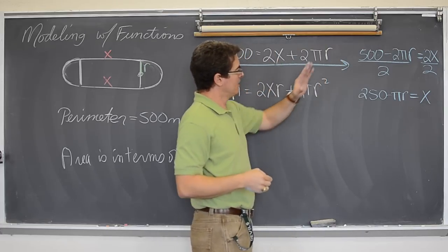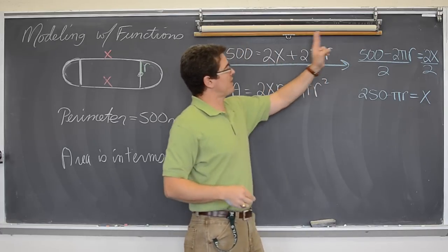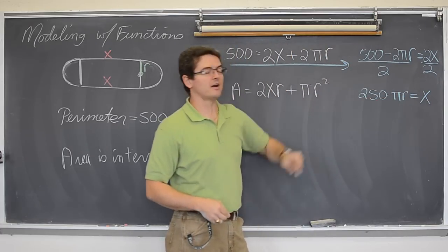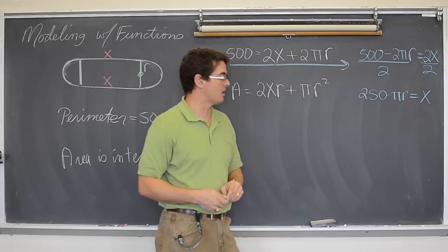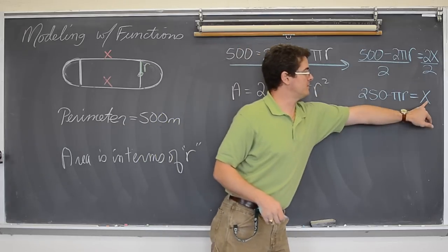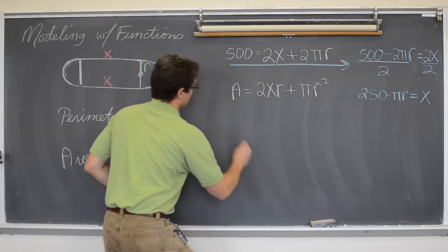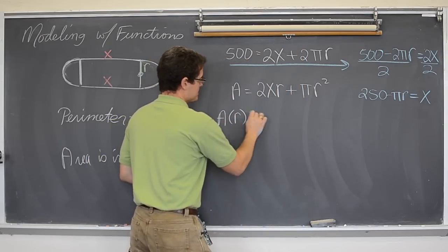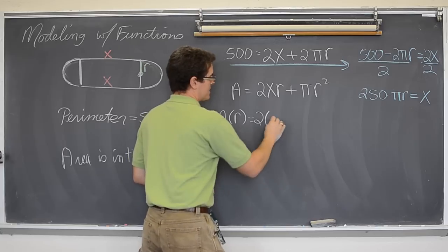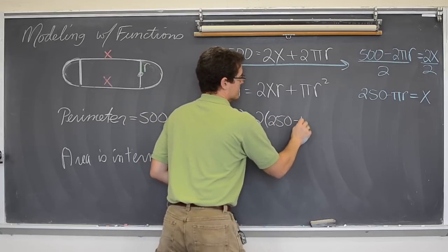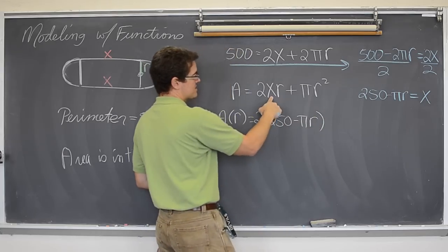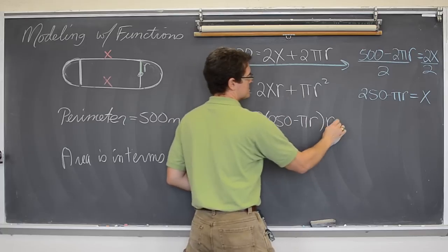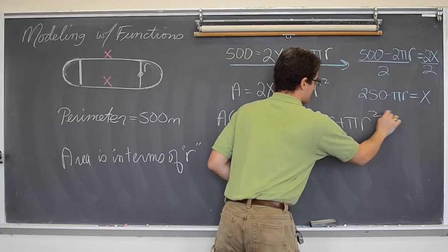Now, with my fixed perimeter 500, x equals 250 minus πr. So, where this x is, this will go. So, area in terms of r is 2 times (250 minus πr), that is this x times r, plus πr².